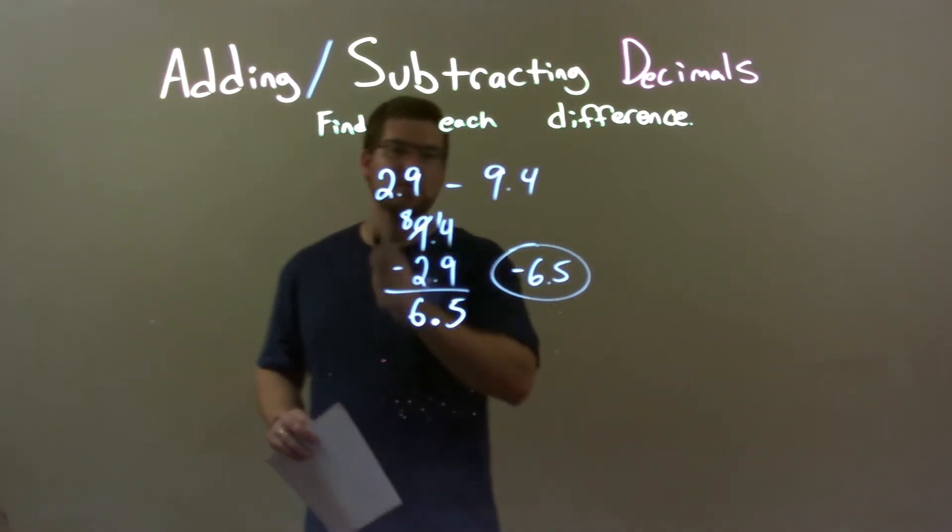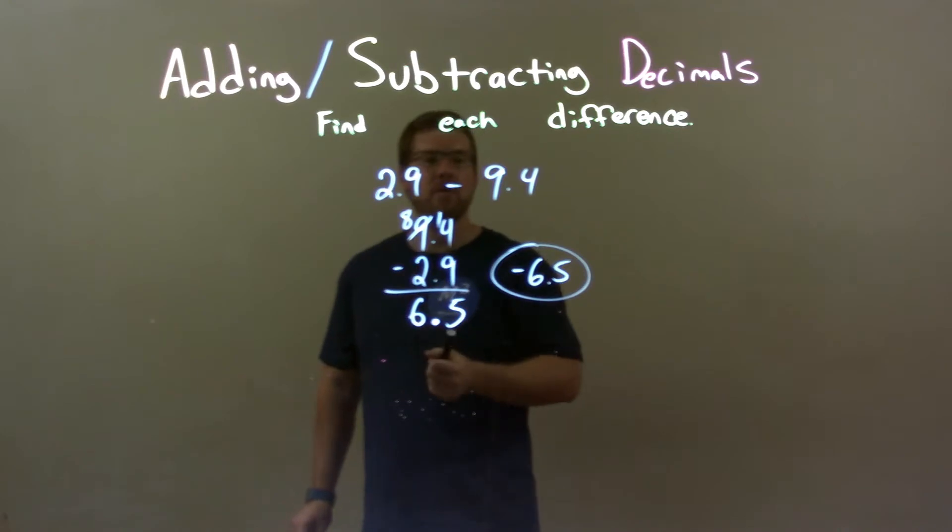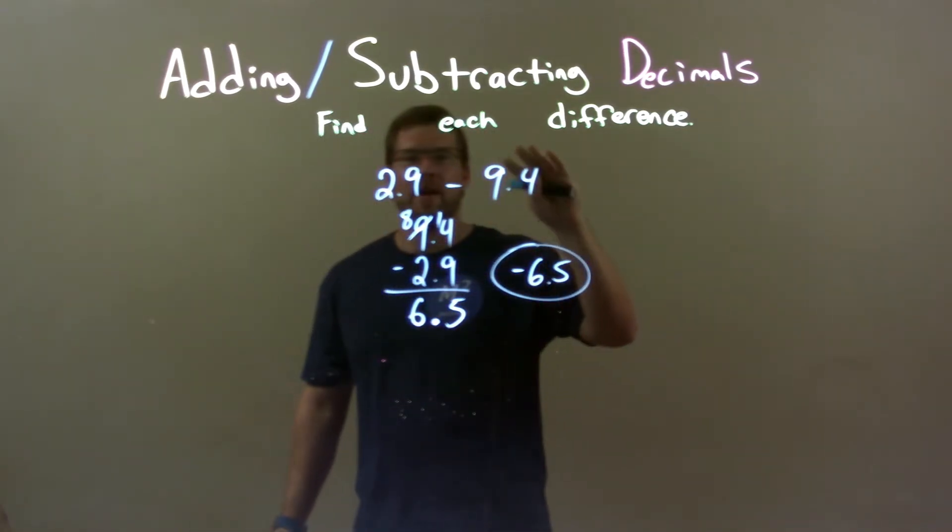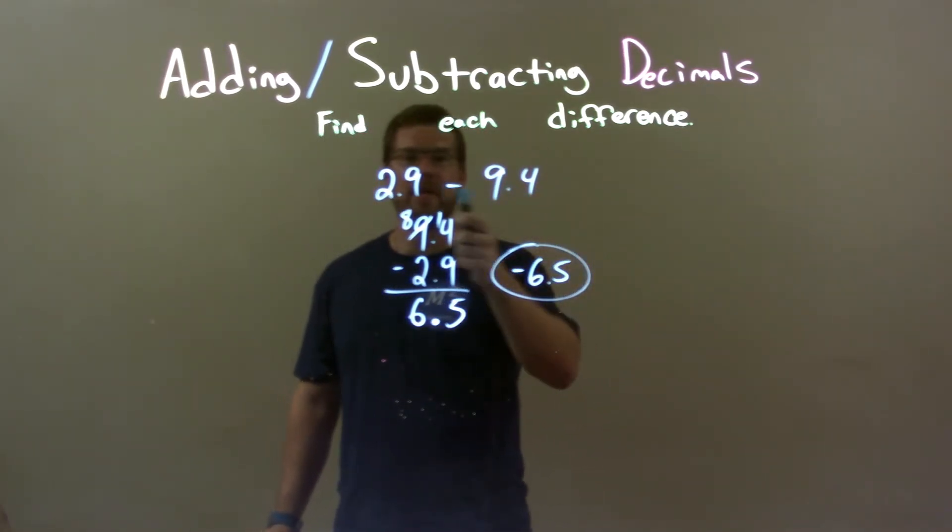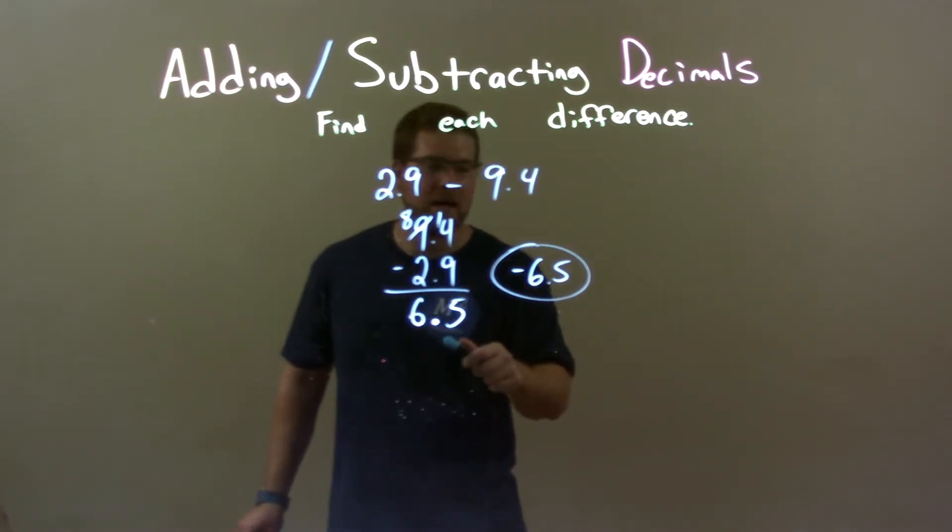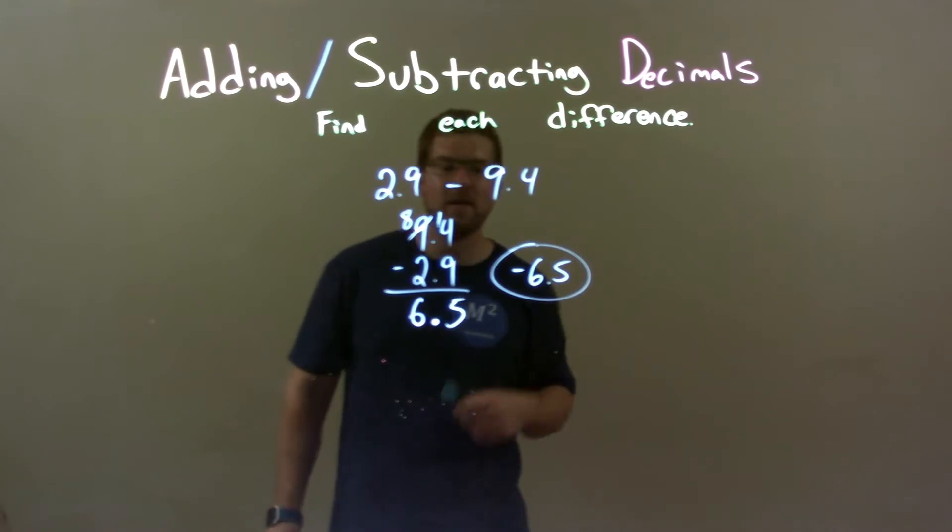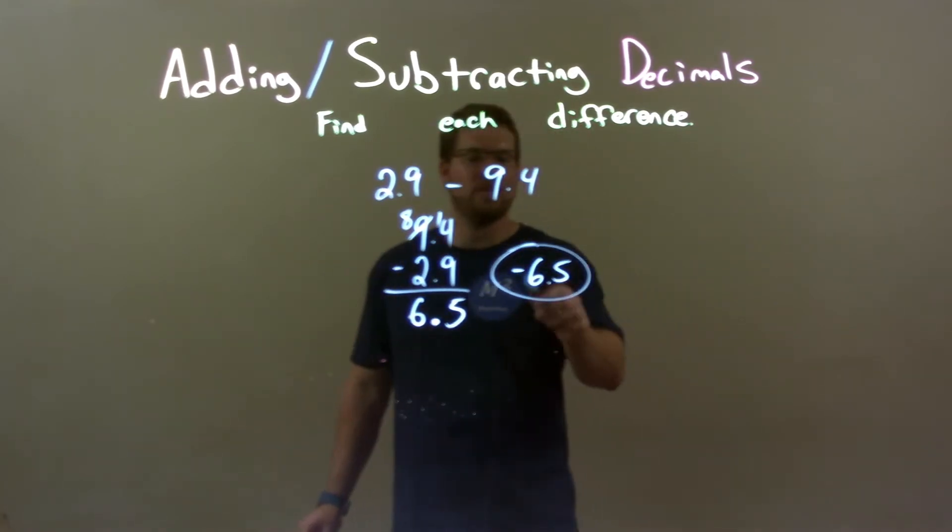So, quick recap, we're given 2.9 subtracted by 9.4. Well, we knew 9.4 was larger, so that made our final answer negative. I then just found the difference between these two numbers, which got 6.5, but I knew it had to be negative, so our final answer is negative 6.5.